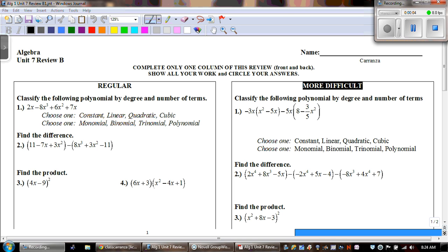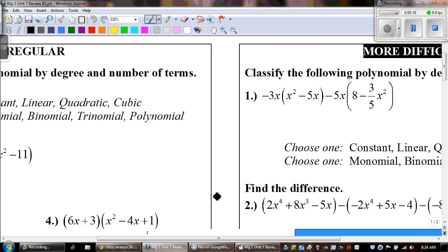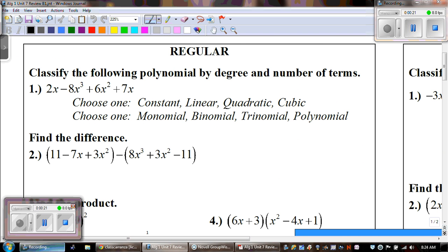Hey guys, this is Mr. Grice for Algebra Unit 7 Review B. Remember to complete only one column of this review, the front and the back, show all your work, and circle your final answers. I am going to be doing the regular side.